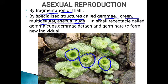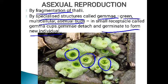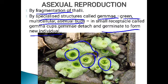When fully matured, the gemma — the asexual buds — get detached from the parent body and germinate to form a new individual, a new liverwort. The gemma cups are present on the thallus. When the gemma mature, they get separated from the parent body and develop into a new individual. This is how liverworts reproduce asexually by producing gemma.